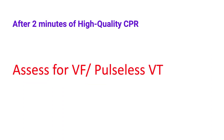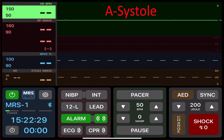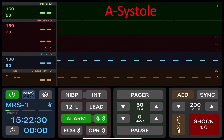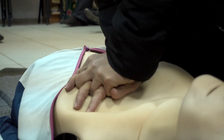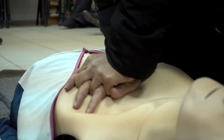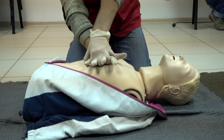After two minutes, stop, switch, and analyze. Again we want to hunt for VF or pulseless VT, but again we see it's asystole, so immediately start high-quality CPR pushing hard, pushing fast at a rate of 100 to 120 pushes per minute.